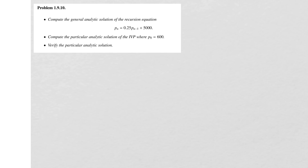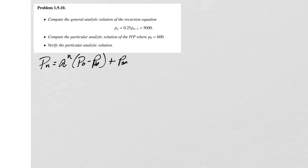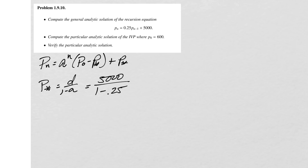The first thing we need to do is write out our formula for the general analytic solution, which looks like: p_n = a^n times (p0 minus p*) plus p*. We already know the 'a' parameter is 0.25. We need to figure out p*, and the formula reference card tells us p* = d over (1 minus a). Substituting our values — 5000 and 1 minus 0.25 — gives us p* = 6,666.67. That's our equilibrium value.